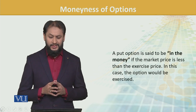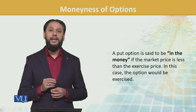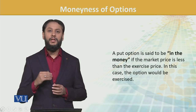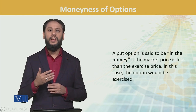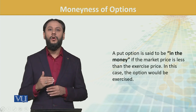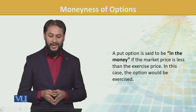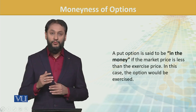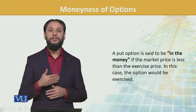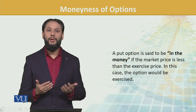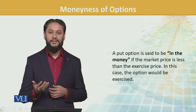A put option is said to be in the money if the market price is less than the exercise price. A put option is the right to sell. So if your strike price — the rate at which you can sell — is higher, and the market price is lower, you are at an advantage position. So it is referred to as in the money; the option would be exercised. You can sell something for 200 through the option while it is only 160 in the market, so you will preferably exercise the option.